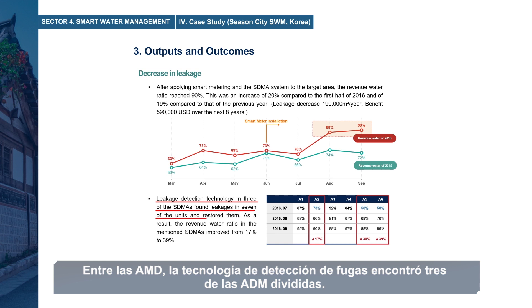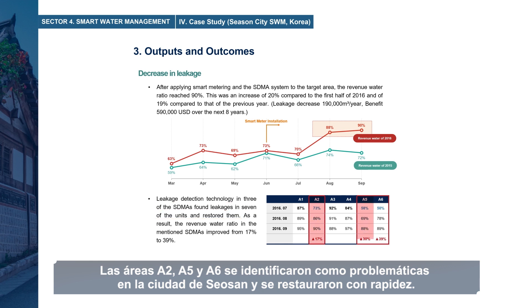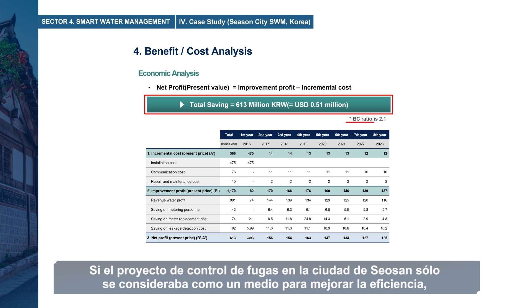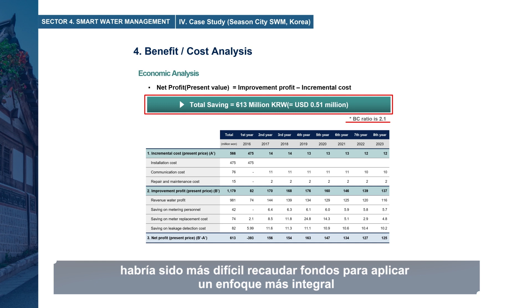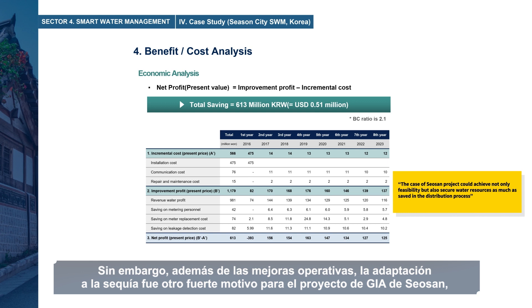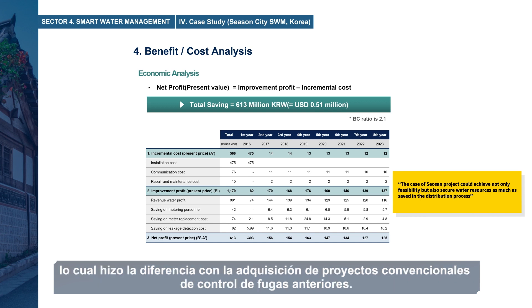Among the sub-DMAs, leakage detection technology found that three of the divided sub-DMAs — A2, A5, and A6 — were identified as problematic in Seosan City, and these were restored quickly. This project was implemented with investment from Seosan City and the Central Government's Drought Budget Package. If the leakage control project had been regarded only as a means to improving efficiency, it may have been more difficult to raise funds. However, in addition to operational improvements, drought adaptation was another strong reason for the Seosan SWM project, making it different from previous conventional leakage control projects.